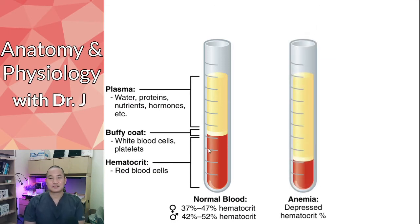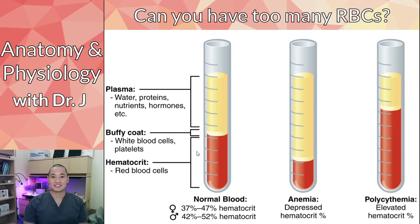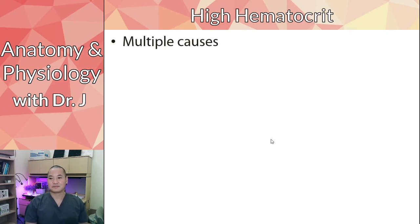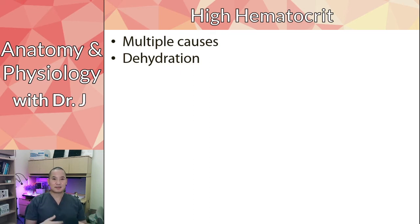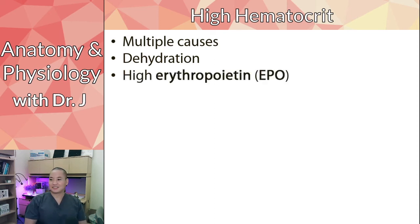So that's anemia - low hematocrit. Can you have too many red blood cells? Yes - the term is polycythemia, meaning elevated hematocrit. Many things can cause it, such as dehydration, which concentrates everything in your blood including red blood cells. Another cause is high EPO - like Tour de France dopers who took EPO, giving them more red blood cells and therefore higher hematocrit.